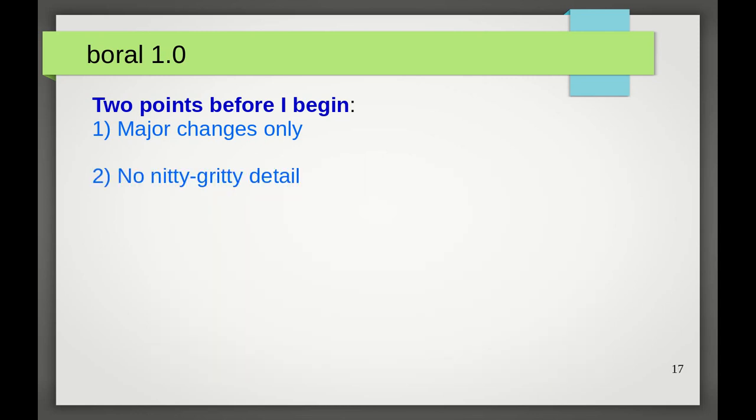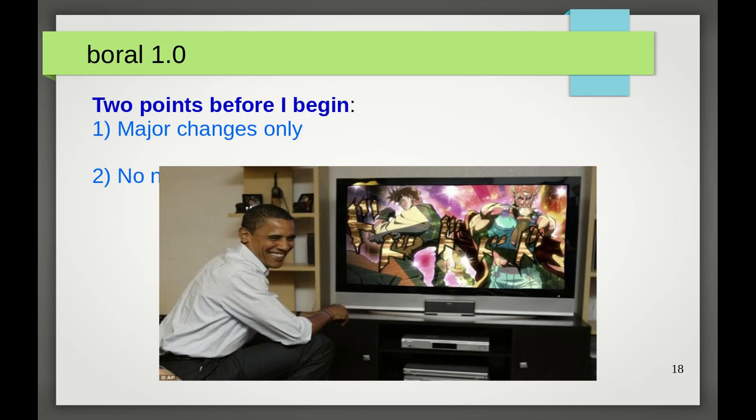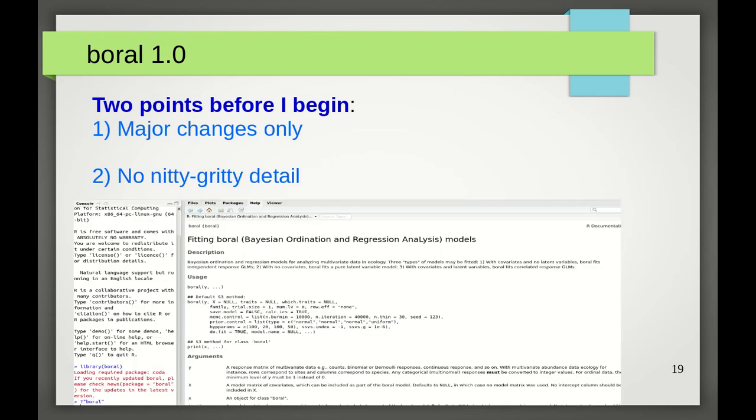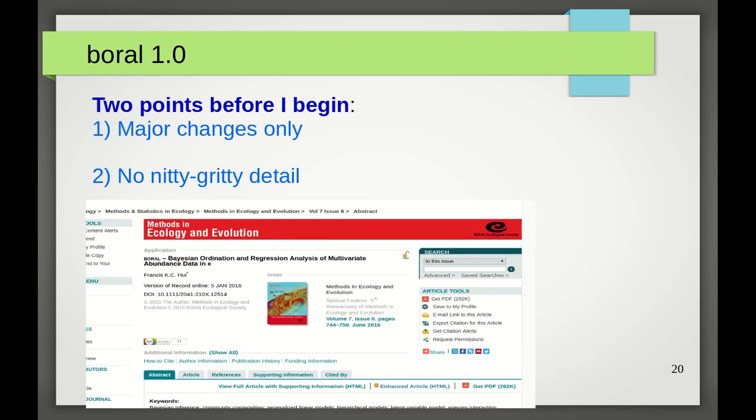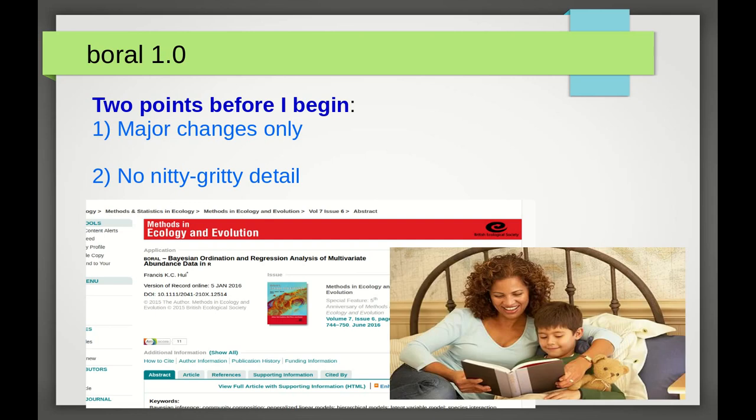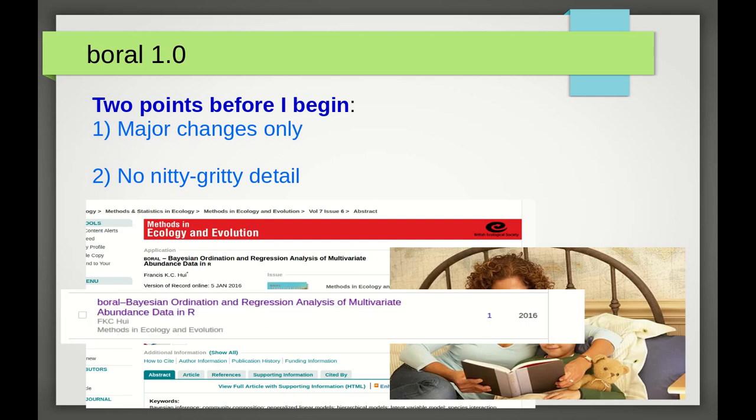Number two. I'm not going to go into any of the nitty-gritty detail on each of the major changes. Because again, you know, better things to do with your life. Besides, if you want details, then please read the help file corresponding to the function you're interested in. I should also point out that there is now a methods in ecology and evolution software paper on boral, which you can of course read before bedtime and also cite in your work if you're using boral. And so, without further ado, here are some of the major changes that have been made to boral over the past two years.